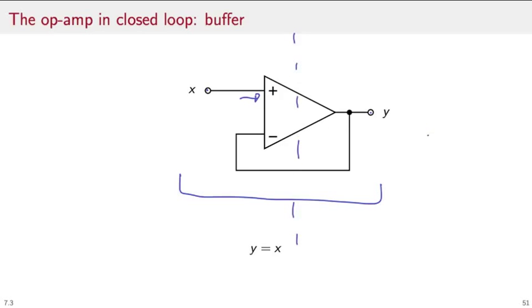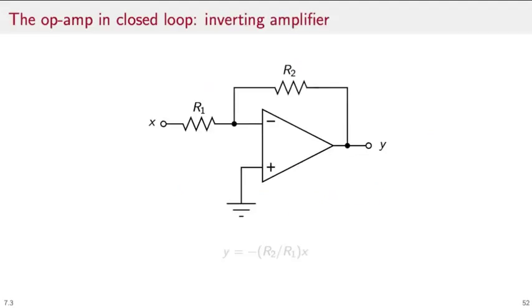We can complexify the closed-loop a little bit by adding a couple of resistors. In this case, we have what is called an inverting amplifier. Again, the system will stabilize when the difference between inverting and non-inverting inputs is zero. The voltage here, let's call it V0, is equal to zero because the non-inverting input is connected to ground. That means the current flowing in the first resistor will be, according to Ohm's law, I0 equal to X over R1.